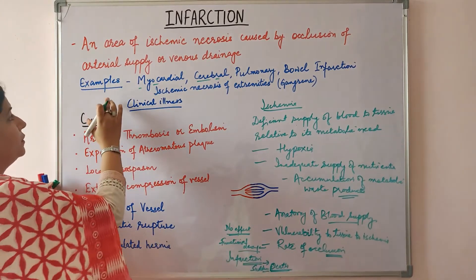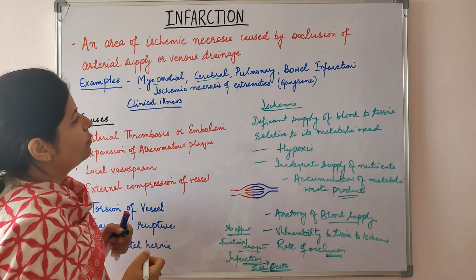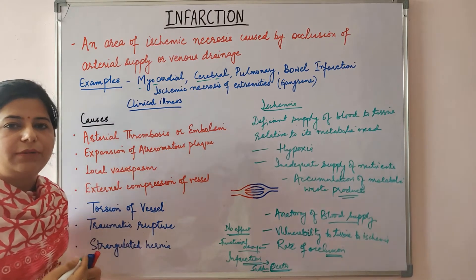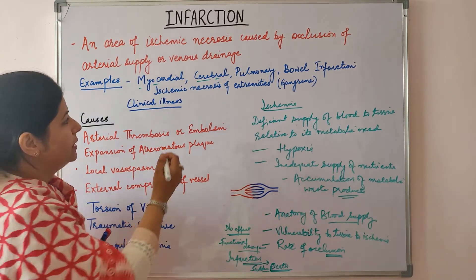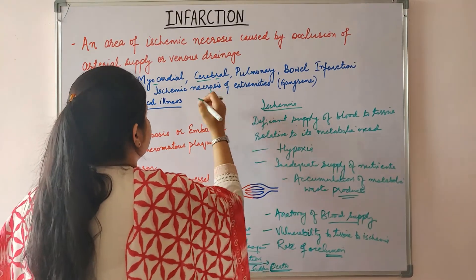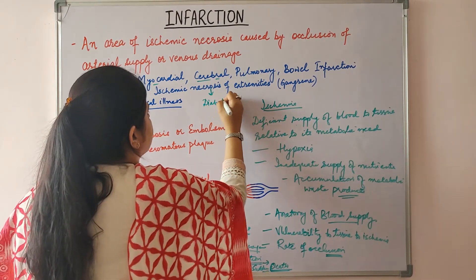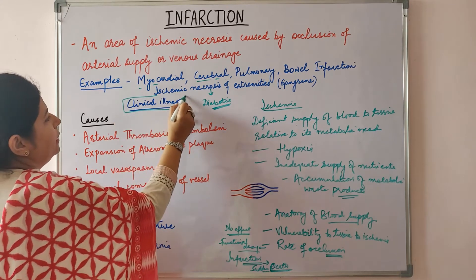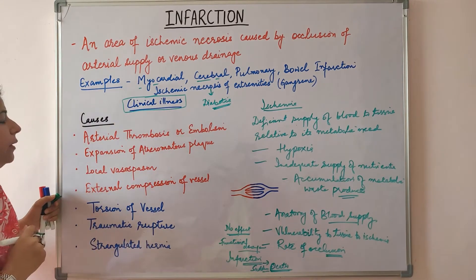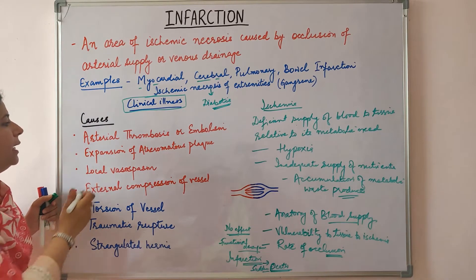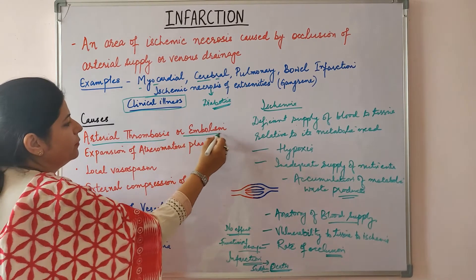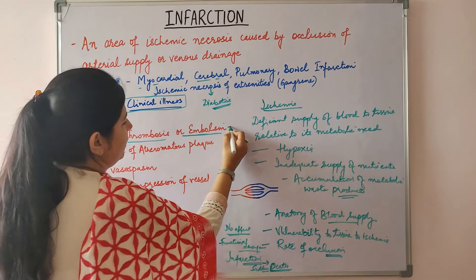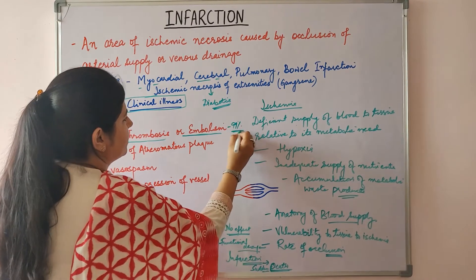Important examples of infarction include myocardial infarction, cerebral infarction, pulmonary infarction, bowel infarction, and ischemic necrosis of extremities called gangrene — a serious complication, especially in diabetics. Infarction is an important cause of clinical illness. The major cause is arterial thrombosis or embolism, seen in 99% of tissue infarction cases.